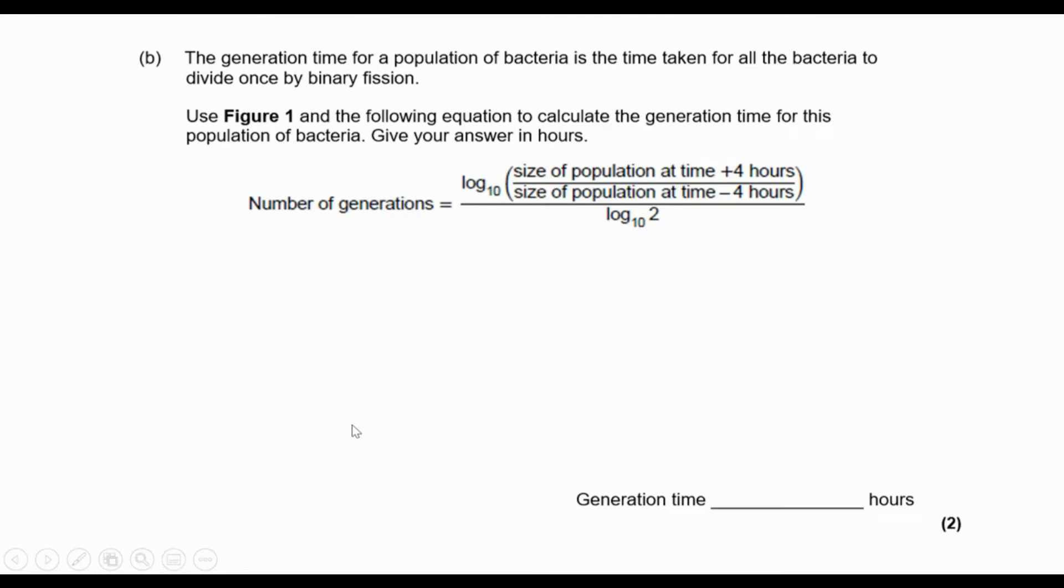The generation time for a population of bacteria is the time taken for all the bacteria to divide once by binary fission. It says use Figure 1 and they give you the following equation to calculate the generation time for this population of bacteria. Give your answer in hours.